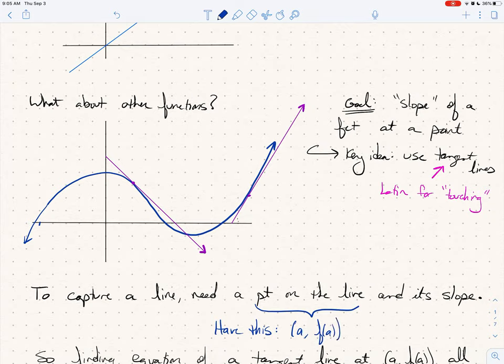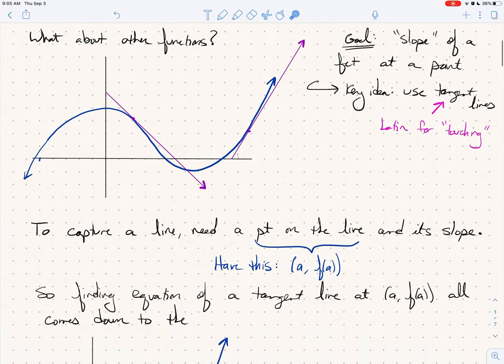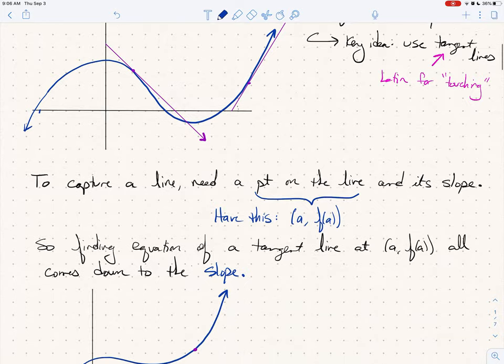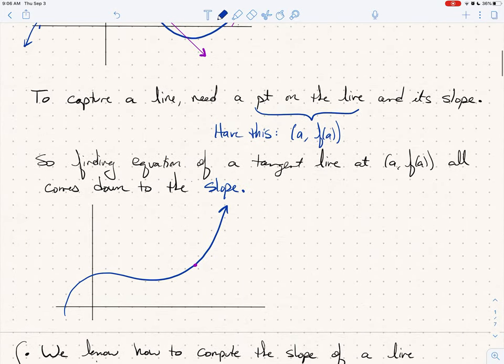And the point that we're interested in is you pick your x value a, and then we know the y value is f of a, because the point on our tangent line that we're interested in is the point that it shares with the curve itself. So it all comes down to finding the slope. How do you find the slope of the tangent line? So that's sort of the key question. Let's actually write that down. So how do we find the slope of a tangent line?